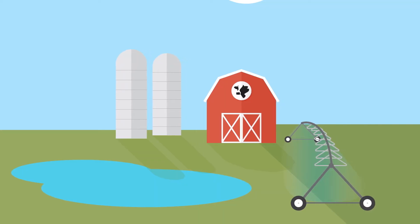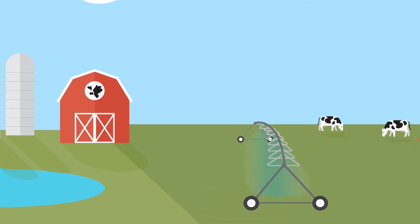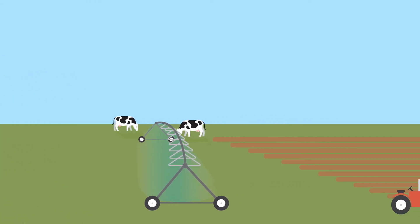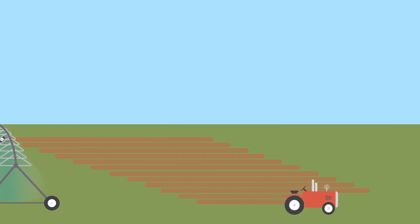The water is stored in lagoons on the farm and pumped through irrigation pivots, and the nutrient-packed fertilizer is spread and used the same way it's been done by farmers for hundreds of years.